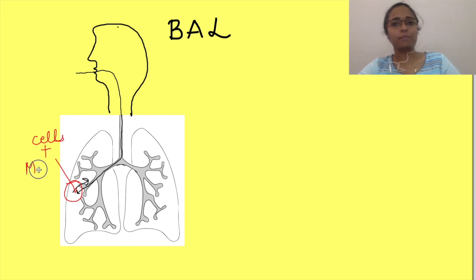So whatever cells and microbes are present in the alveoli are collected in the sample. After this, they extracted total RNA from this sample.